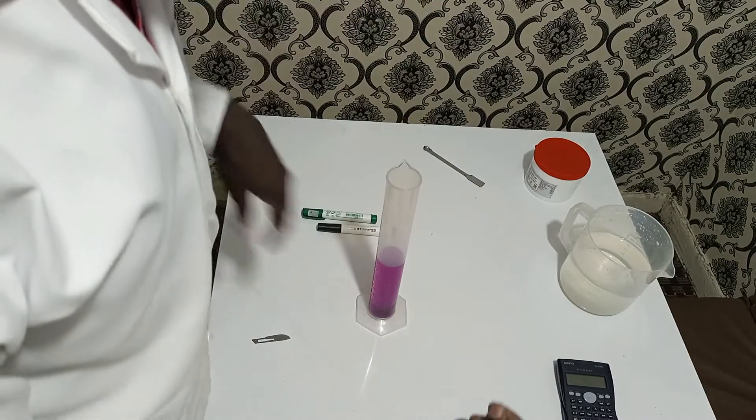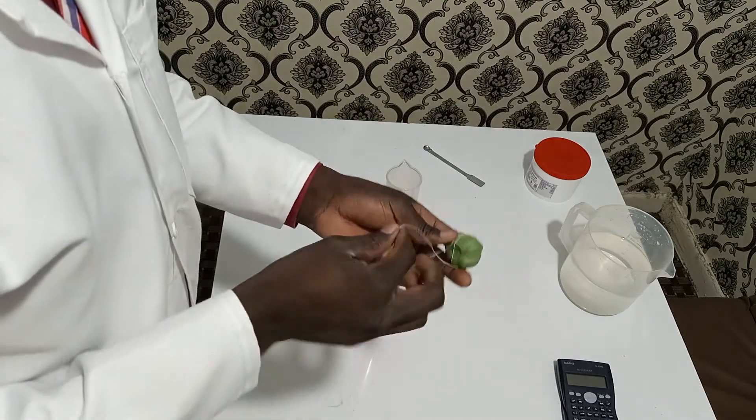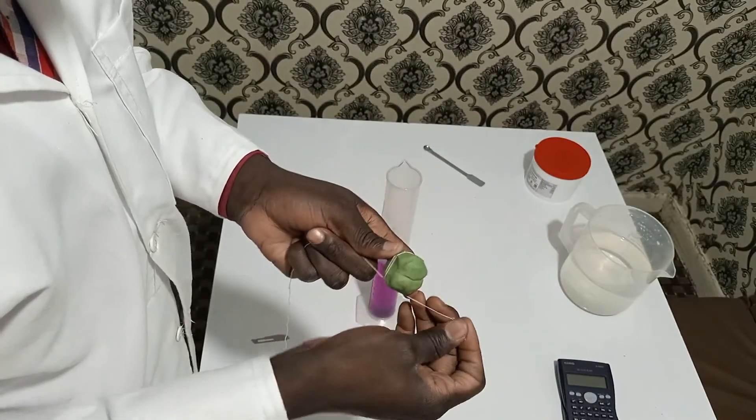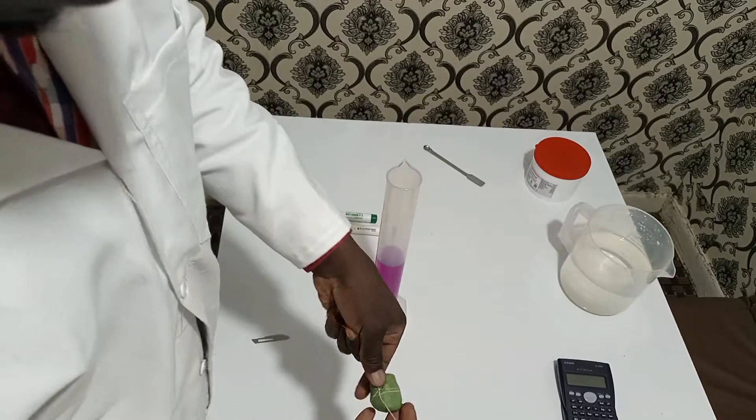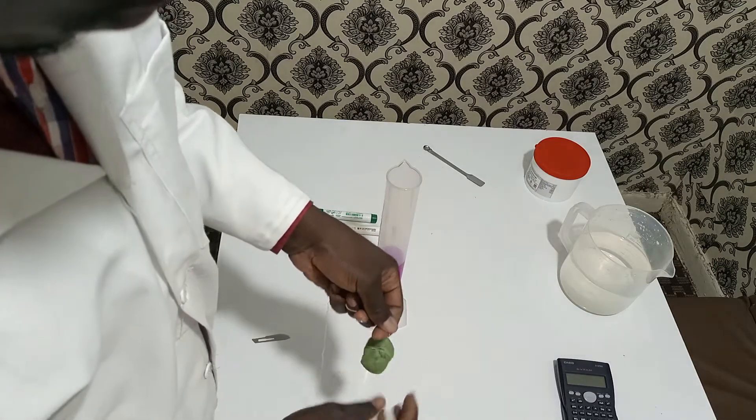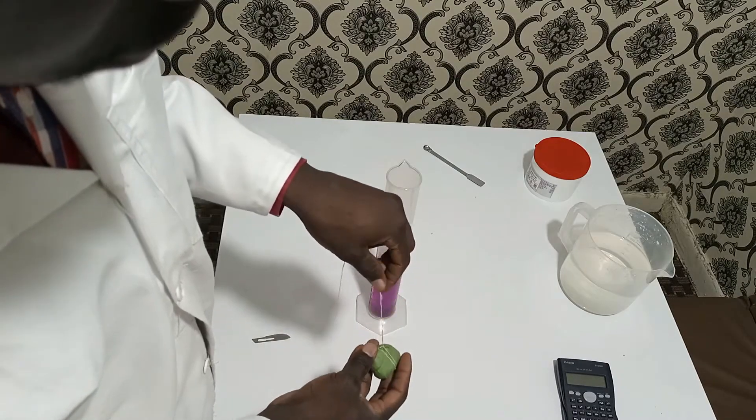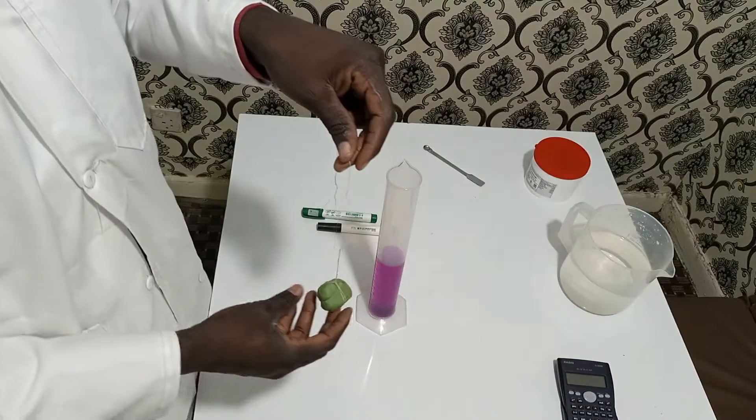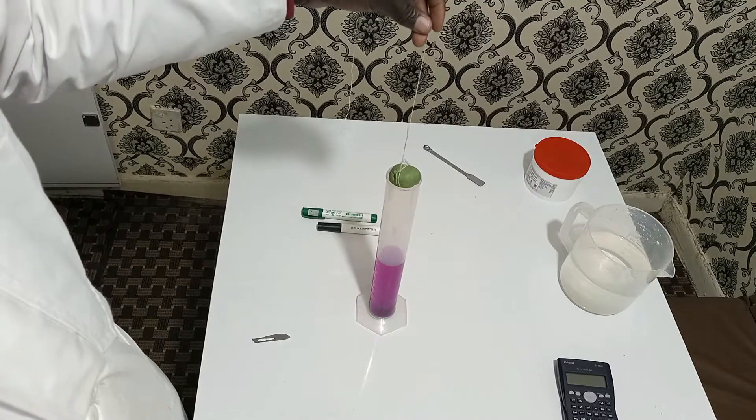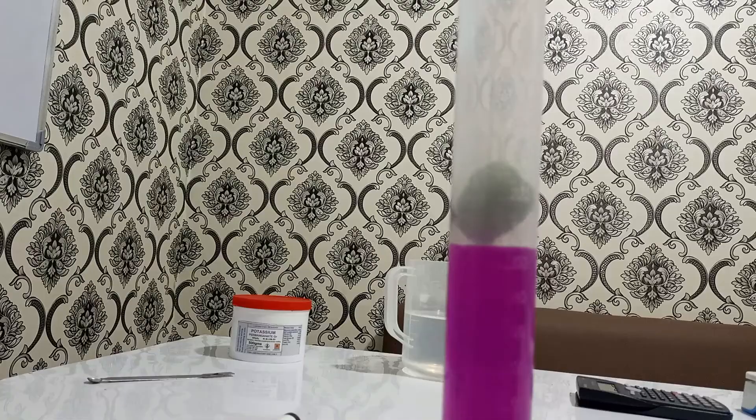So, we are going to tie an object using a string. I have tried to use the thinnest string possible. One of the assumptions we are going to make is that this string does not occupy space. In other words, the volume of this string is going to be assumed to be negligible. After doing that, we are going to carefully lower it. Carefully lower the solid.